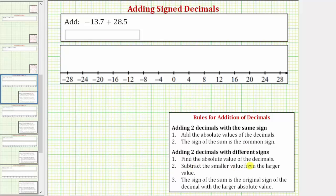Step one: we find the absolute value of both decimals. So we need to determine the absolute value of negative 13.7 and the absolute value of positive 28.5. The absolute value of a number is a number's distance from zero, and distance is always positive, and therefore the absolute value of a number is always positive. The absolute value of negative 13.7 is positive 13.7. The absolute value of positive 28.5 is positive 28.5.